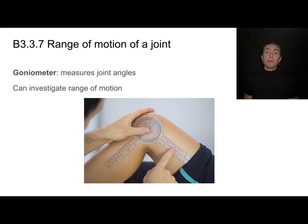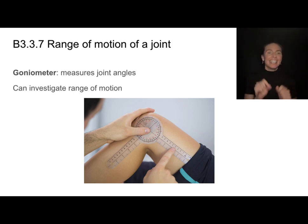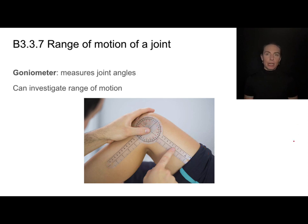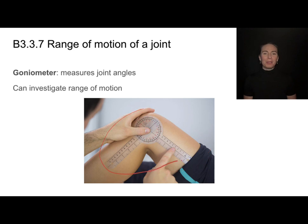You can measure joint range of motion with something called a goniometer — a measurement tool that allows you to measure joint angles. You can investigate range of motion for different types of joints, the same type of joint in different people, or in different ages. There are a lot of independent variables you can look into using this goniometer.